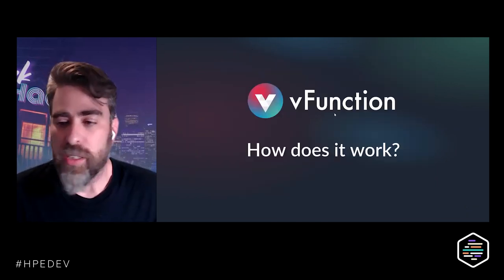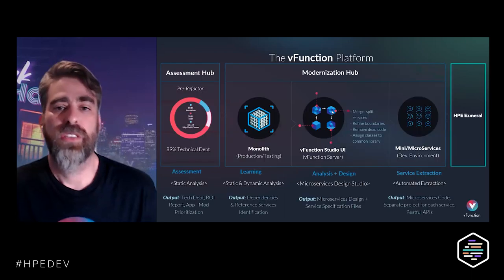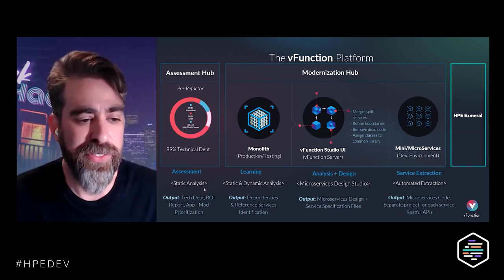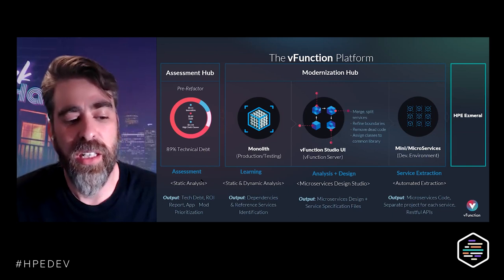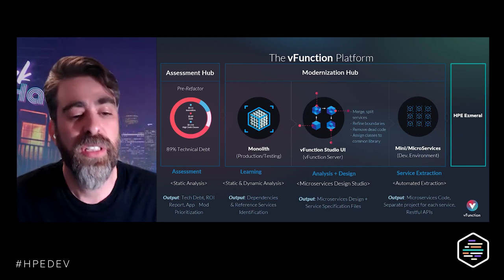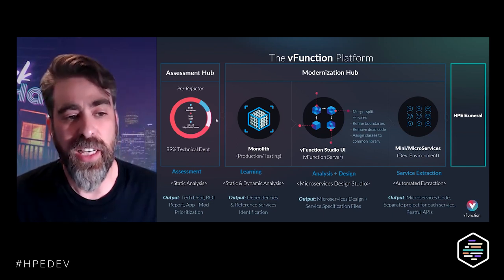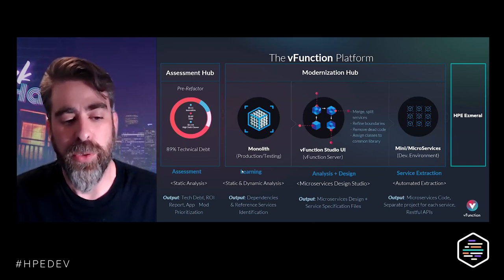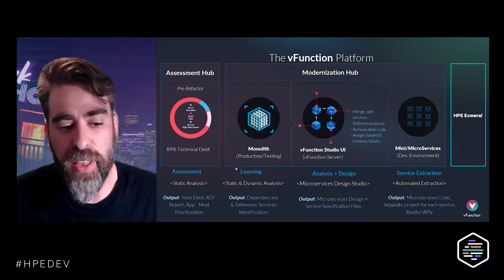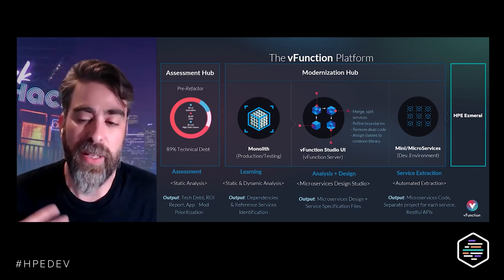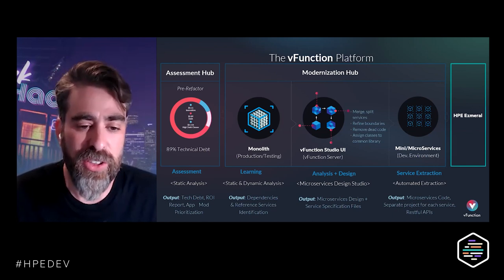So how does it work? We start from the left — with static analysis we analyze the technical debt, which allows you to prioritize refactoring for your application. Once you decide to refactor, you go into the modernization hub where you start with learning. The system needs to run — your application needs to run as vFunction analyzes it.